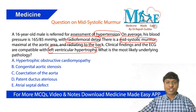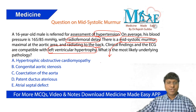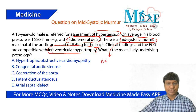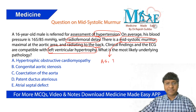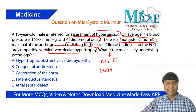Consider the mid-systolic murmur. In which conditions will you have this mid-systolic murmur? You can have it in patients with aortic stenosis, pulmonary stenosis, hypertrophic obstructive cardiomyopathy, and also coarctation of aorta.